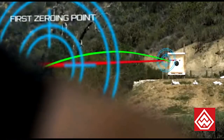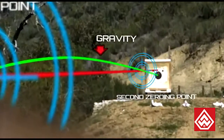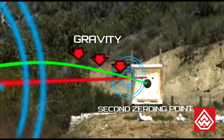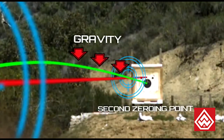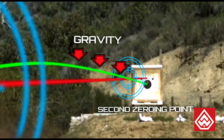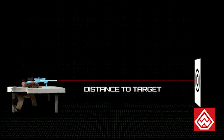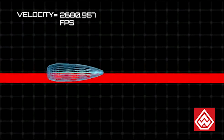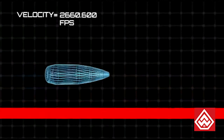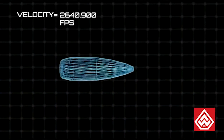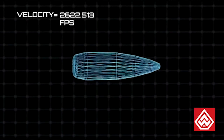After reaching the second zeroing point, gravity pulls the bullet from the line of sight. The rate at which a bullet drops over distance is caused by gravity and is a function of bullet speed. Given a specific distance, the higher the bullet speed, the less time it is subjected to the effect of gravity and the less it drops.